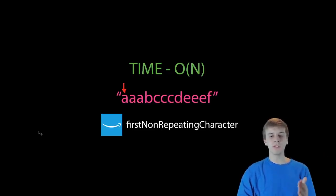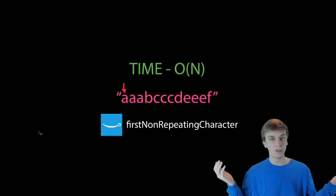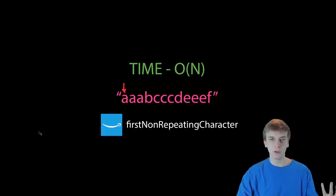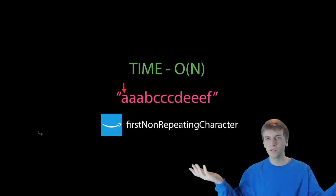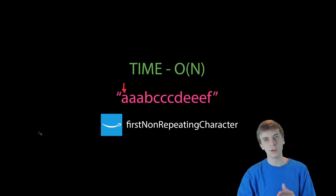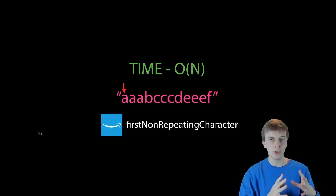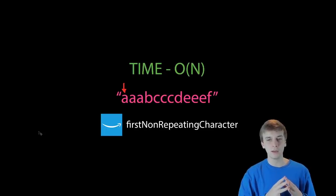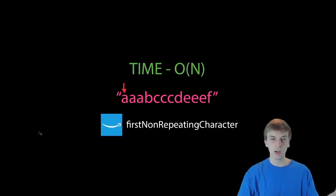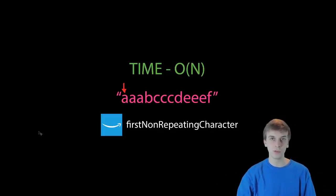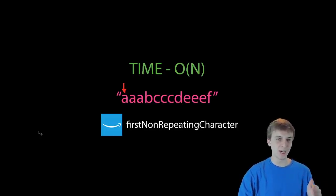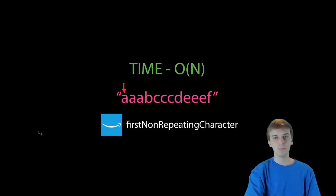That's it for 'First Non-Repeating Character' — an Amazon coding interview question. We got the time complexity down to linear O(n), which is the goal for most of these problems. There are a variety of solutions to pick from, but you'll definitely want the linear one over the O(n²) double for loop. Thanks for watching, and I'll see you in the next video.